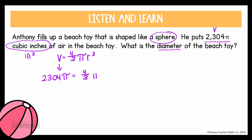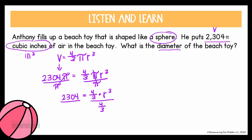Now we're looking at this equation and need to solve for the radius — we want to get r by itself. The radius is being multiplied by 4 thirds and by pi. The inverse of multiplication is division, so we can divide out both values in any order. I'll start by dividing both sides by pi. On both sides, pi over pi cancels to 1. So now we have 2,304 equals 4 thirds times the radius cubed. To undo the multiplication by 4 thirds, we divide both sides by 4 thirds. That reduces to 1, and 2,304 divided by 4 thirds is 1,728.